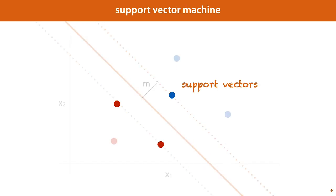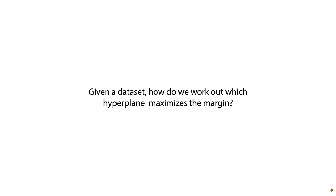The points closest to the decision boundary are called the support vectors. This name comes from the fact that the support vectors alone are enough to describe the model — if I give you the support vectors, you can work out the hyperplane without seeing the rest of the data. The distance from the decision boundary to the support vector is called the margin, and we'll assume that the decision boundary is chosen so that the margin is the same on both sides.